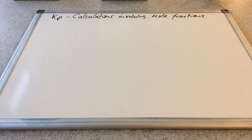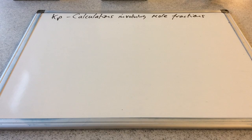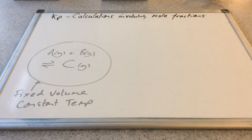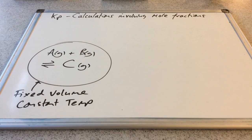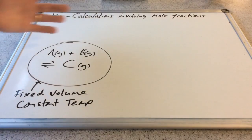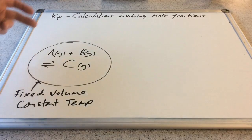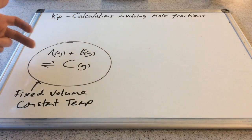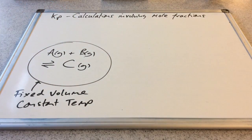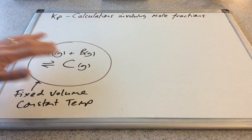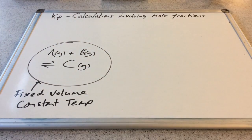In this third KP video, I'm going to look at more complicated calculations involving mole fractions. So let's suppose we've got a container with a gaseous equilibrium inside, so that's A and B in equilibrium with C. The container has a fixed volume and everything's at a constant temperature.